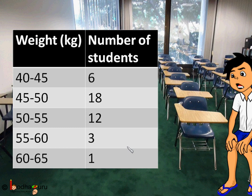The Aryabatta High School arranges a free medical checkup for their students. So here is the data for class 8 students weight. In 40 to 45 kg range, there are 6 students. 45 to 50 kg, there are 18 students. 50 to 55 kg range, there are 12 students and so on.